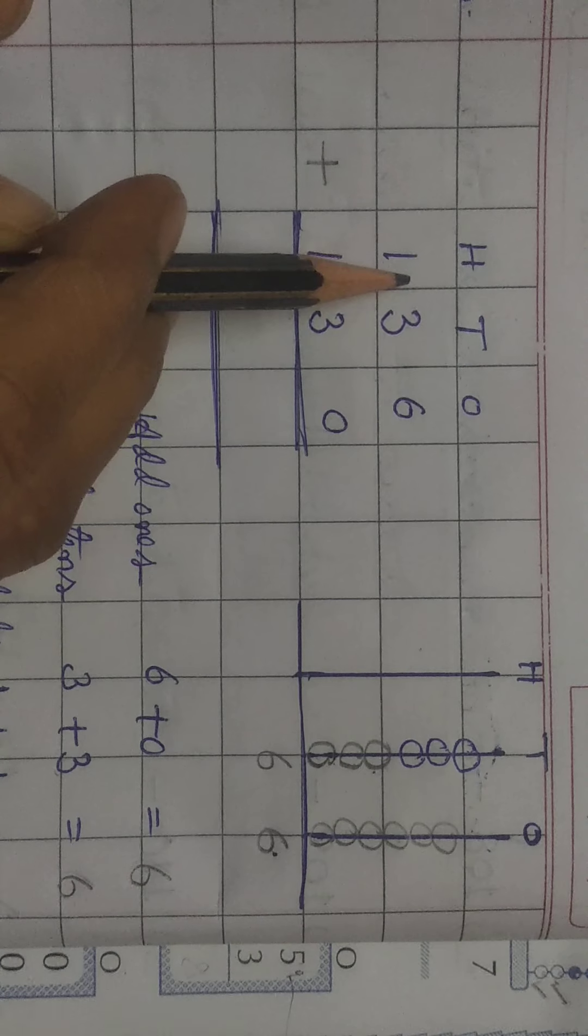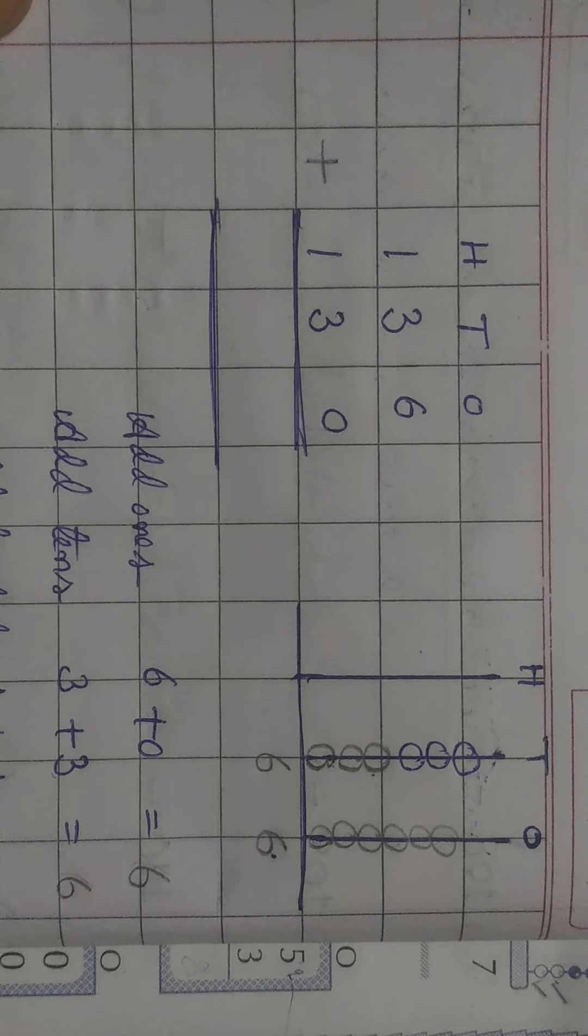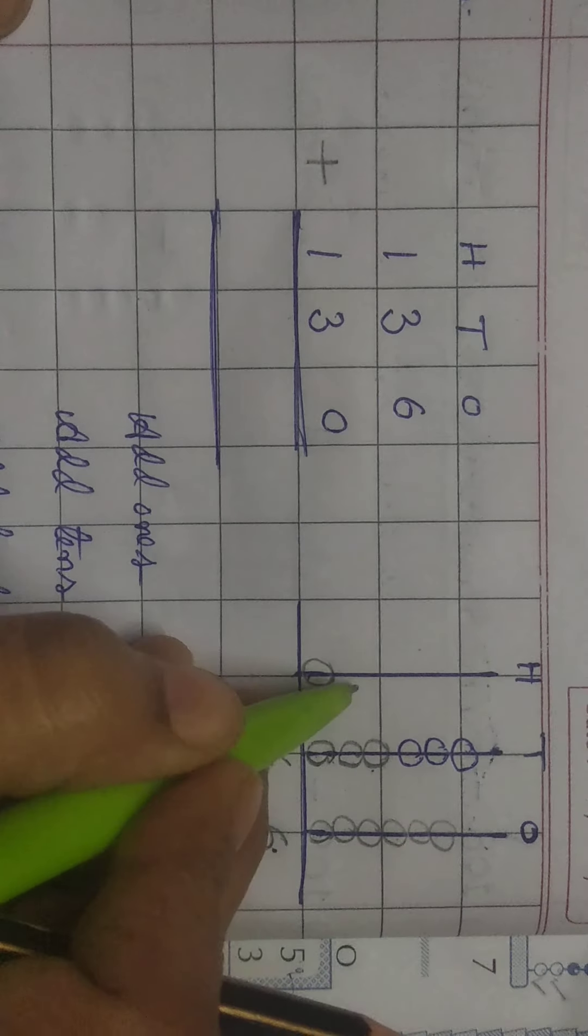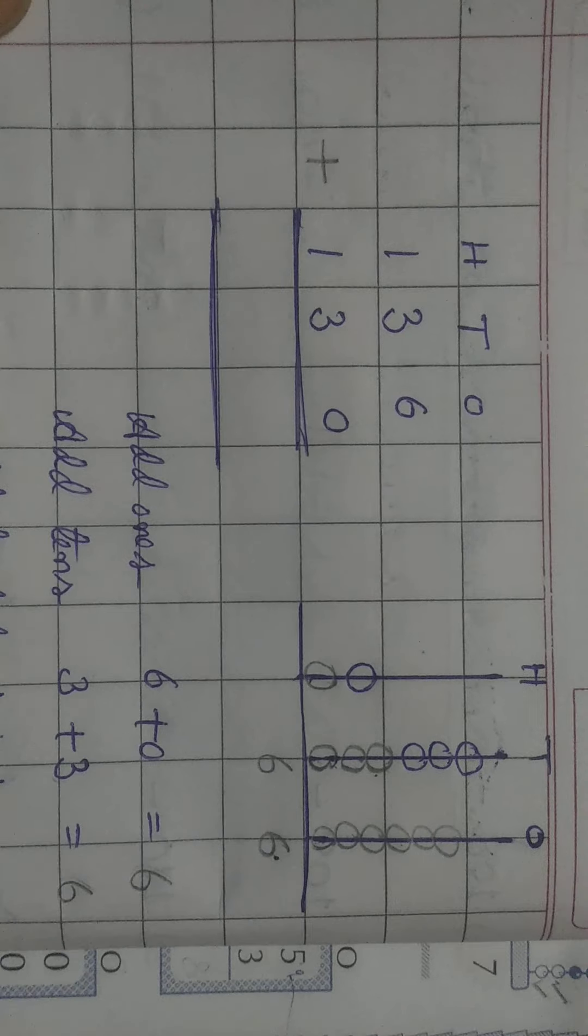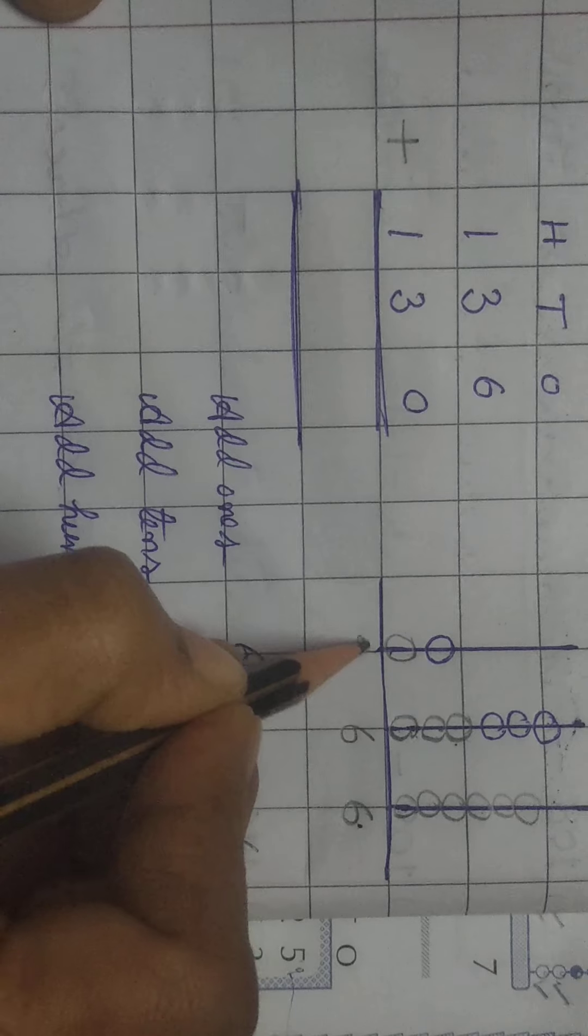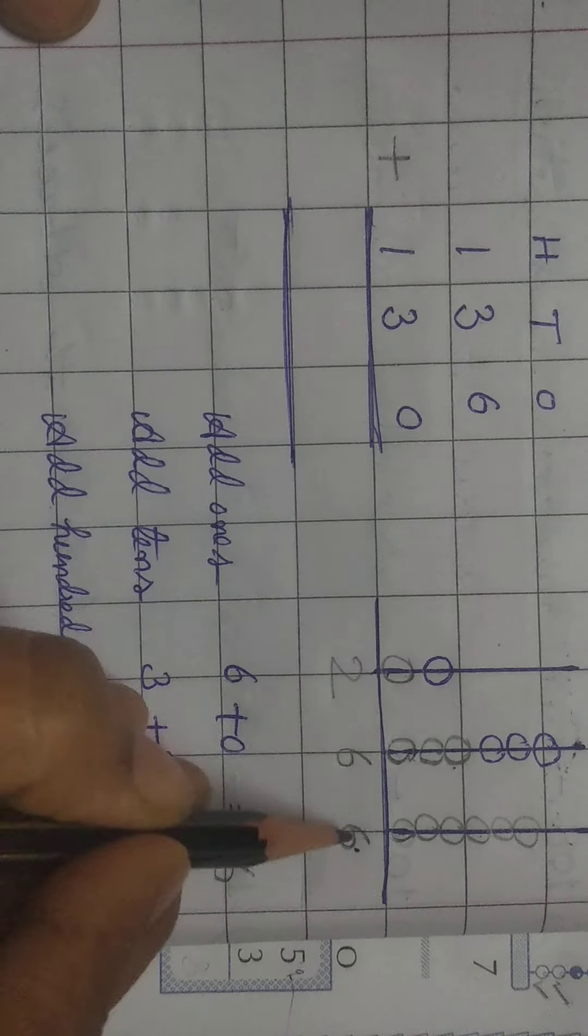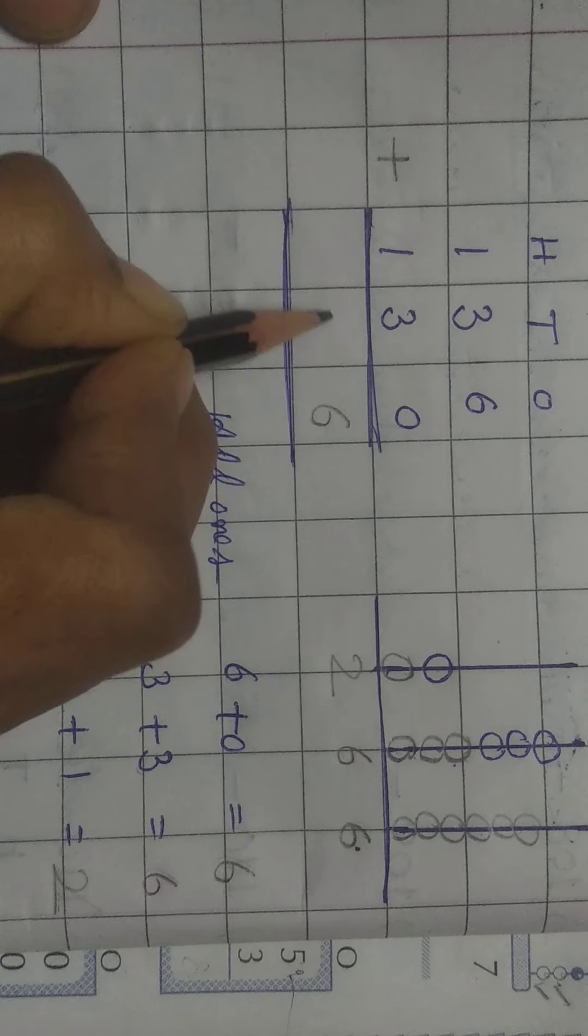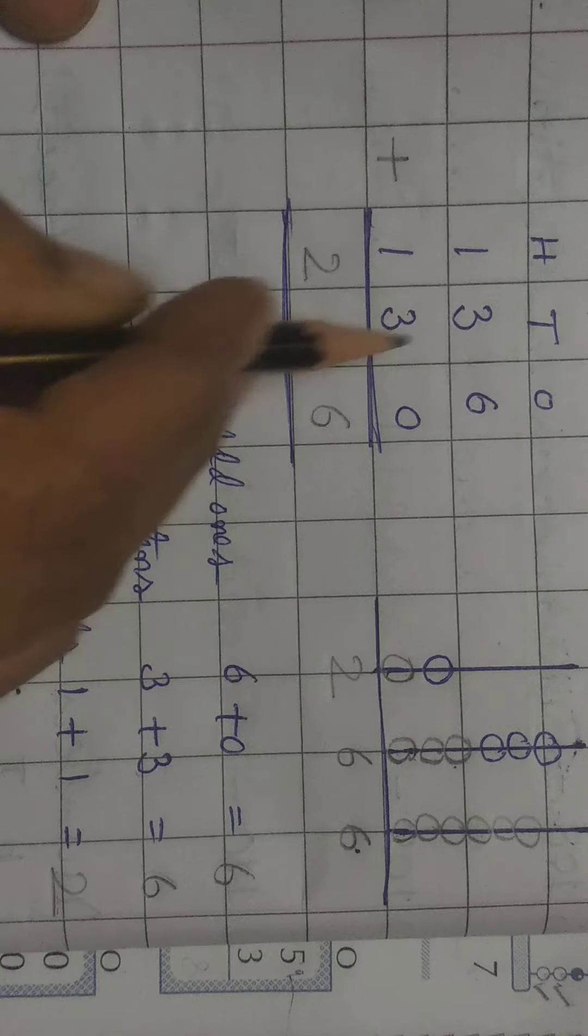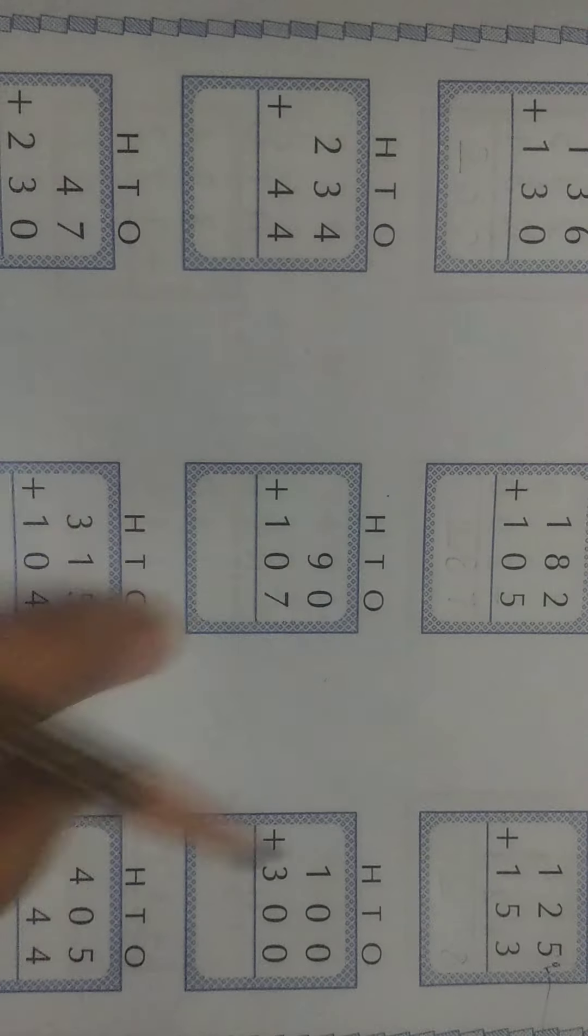Now, let us add hundreds numbers. 1 plus 1. For first one, 1 bead. For second one, draw 1 more bead. So, total how many beads are there? 1 plus 1 is equal to 2. 2 beads are there. So, the answer is in one's place 6, tens place 6 and hundreds place 2. The answer is 266.